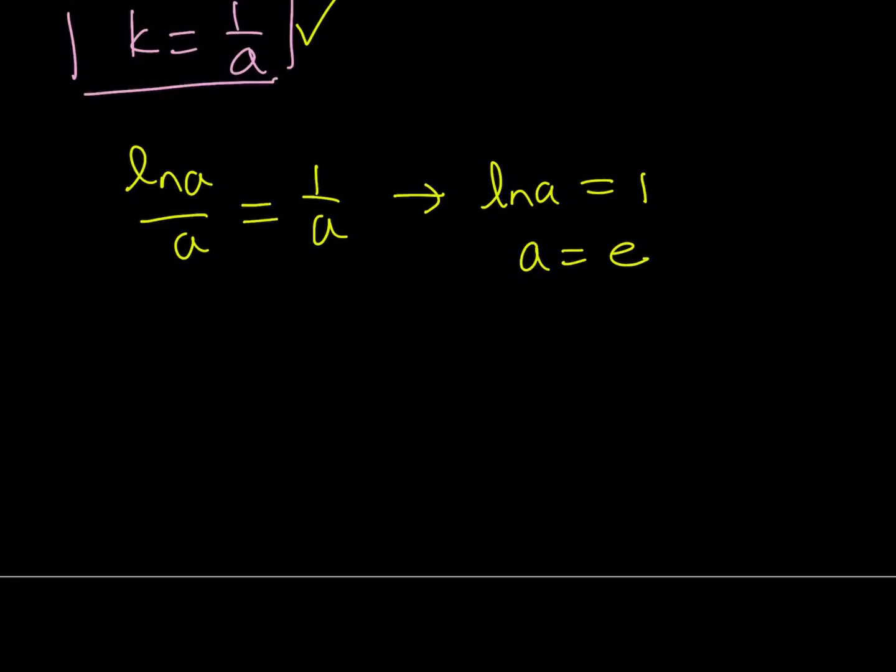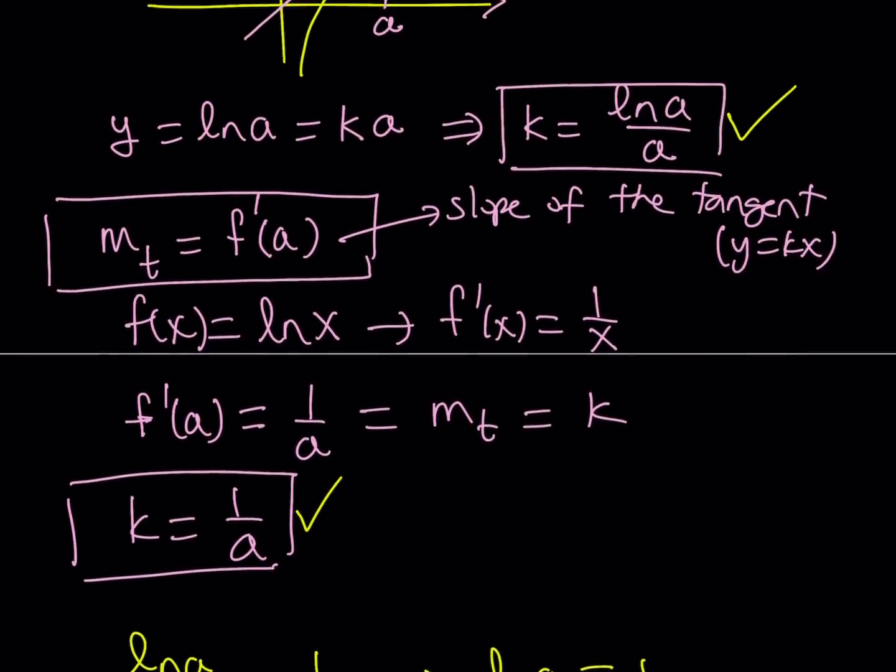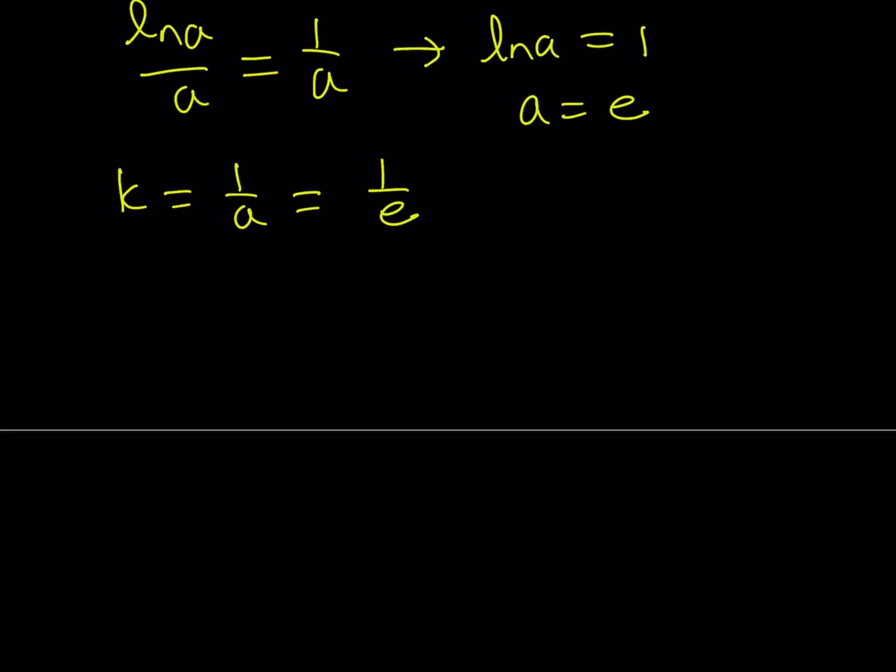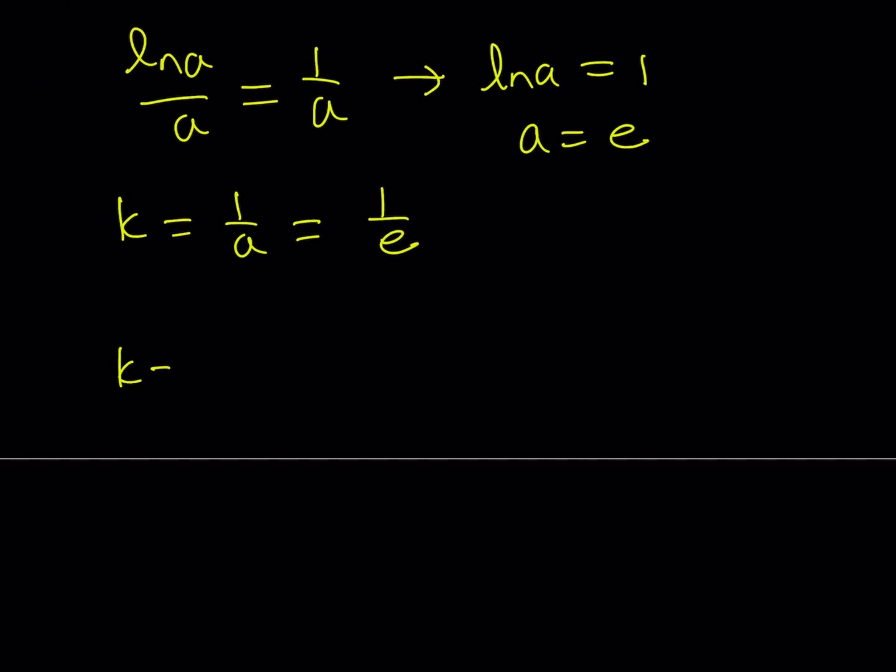But remember, we're looking for the k value, and we know that k equals 1 over a. Therefore, k is just going to be 1 over e. What would happen if you use the other equation to evaluate k? You would get the same thing because k equals ln a over a, and a equals e. So ln e over e is 1 over e as well. So the k value we're looking for is basically 1 over e.